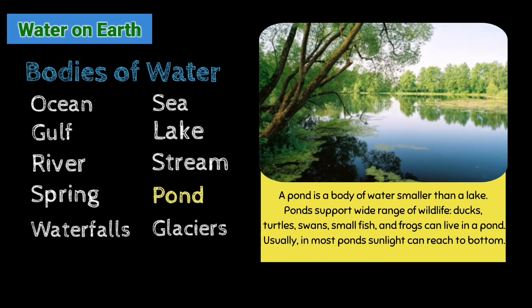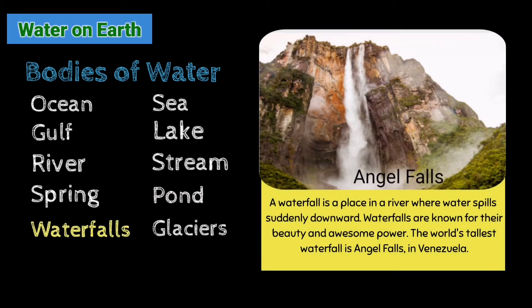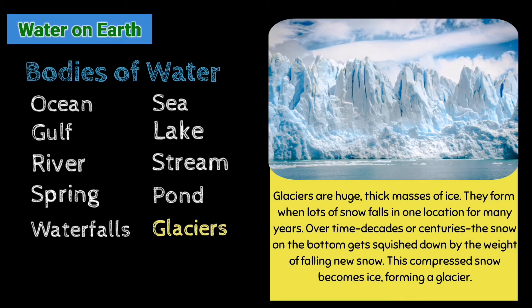Usually in most ponds, sunlight can reach the bottom. A waterfall is a place in a river where water spills suddenly and drops. Waterfalls are known for their beauty and awesome power. The world's tallest waterfall is Angel Falls in Venezuela. Glaciers are huge, thick masses of ice. They form when lots of snow falls in one location for many years. Over time — decades or centuries — the snow on the bottom gets squeezed down by the weight of new falling snow, and this compressed snow becomes ice, forming a glacier.